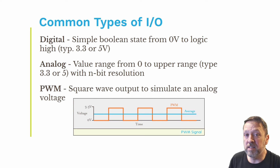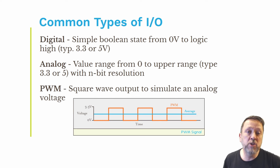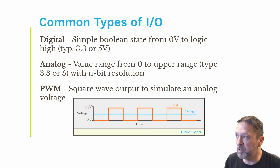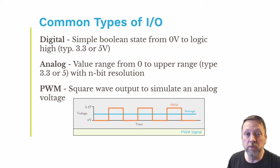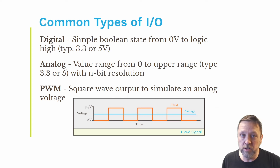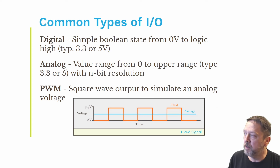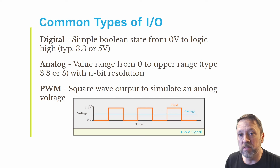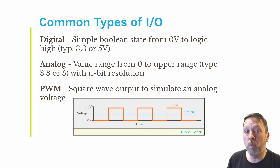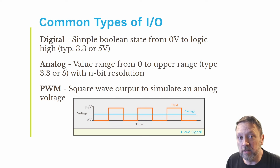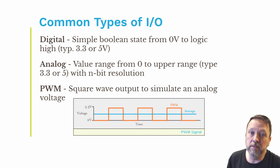The second type is analog — a range of voltage from zero to typically the same as the logic voltage. Those are divided into a specific set of resolution, so it might be 12 bits, giving you zero to 3.3 volts spread out across 12 bits of data. The last one is the PWM, or pulse width modulation. Basically it's a square wave output by the device, and you can change the frequency and the duty cycle in order to generate a simulated or average analog output voltage.